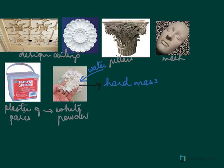You mix plaster of Paris with water and get a soft dough, then quickly arrange your design before the substance hardens. It is similar to cement — a mason adds water and sand, mixes it, applies it to walls, and it hardens irreversibly. The same applies to POP (plaster of Paris): when you add water, you get a hard mass, and this reaction is irreversible.